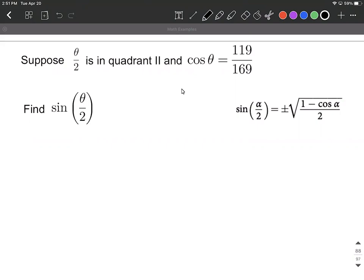As we jump into this, this one's actually pretty straightforward since they gave us cosine of theta. That's going to fill in right in this spot in our formula. So we have the square root of 1 minus 119 divided by 169, all divided by 2.